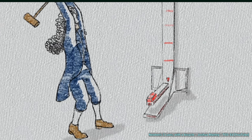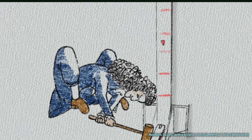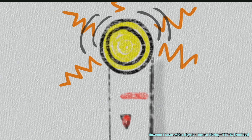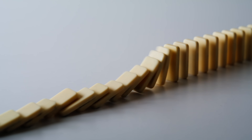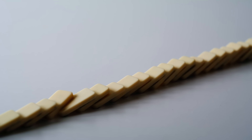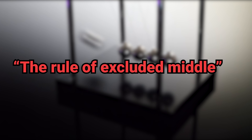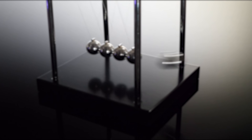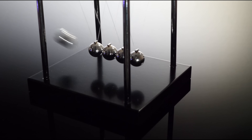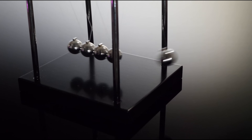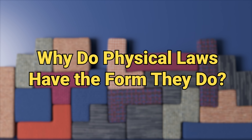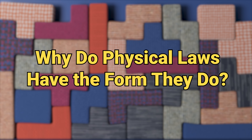All of this, of course, presumes we even know what we mean when we say 'law.' Is the law of the excluded middle actually a law? What if I called it the rule of excluded middle — does it lose its lawhood status and gain rulehood?